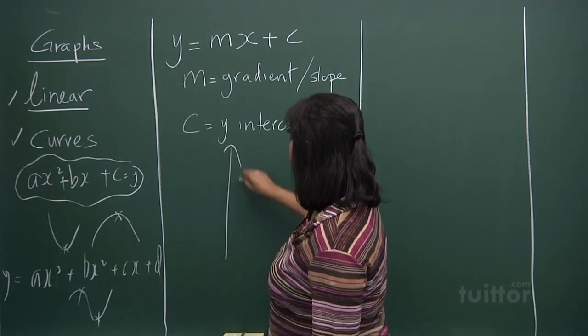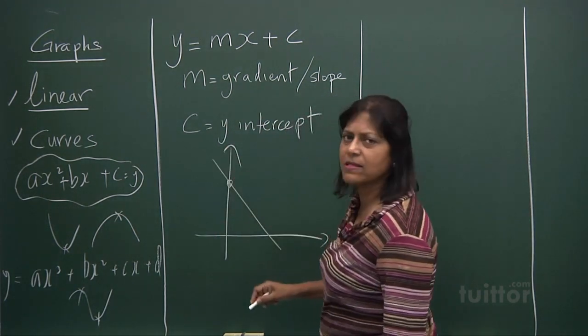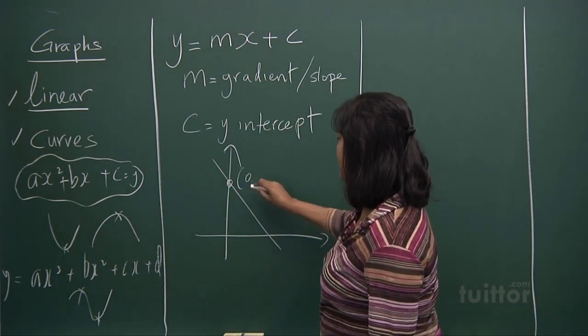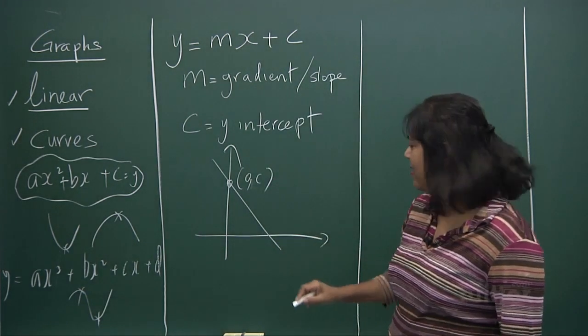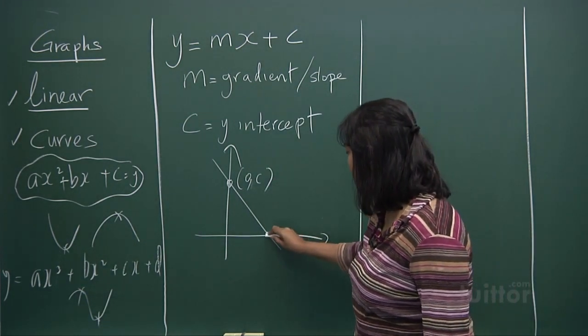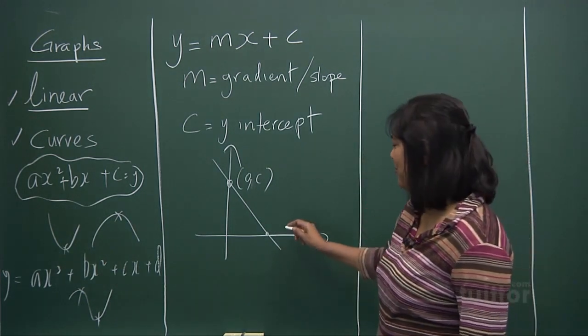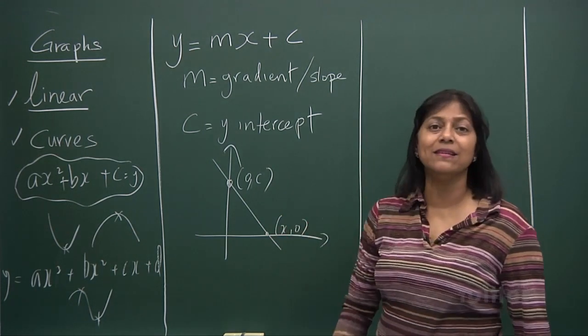Y-intercept means when a graph cuts like this, this is called your c. When your x is 0, y is c. At this point of your graph, x is 0, y is 0—that's the origin.